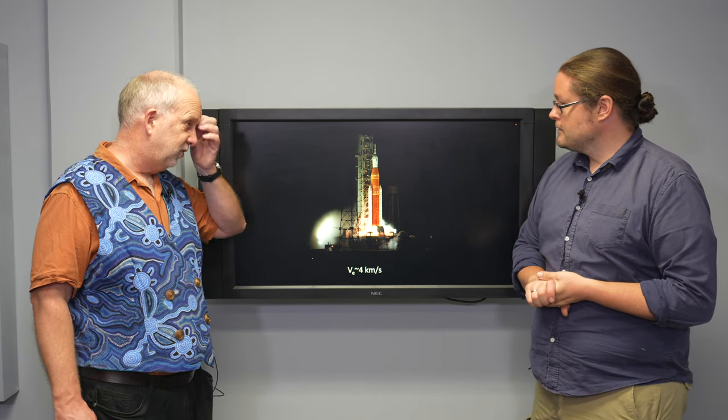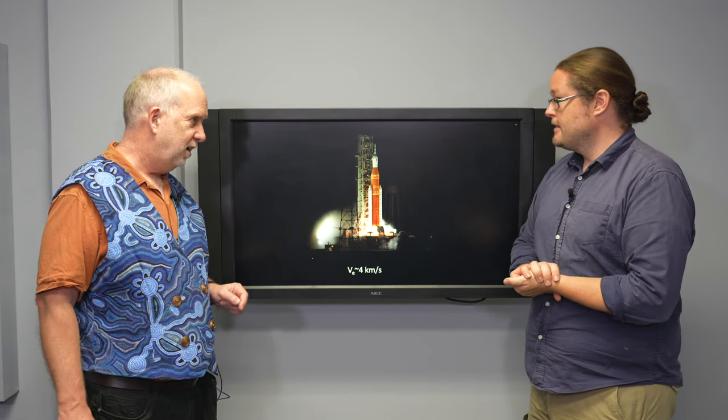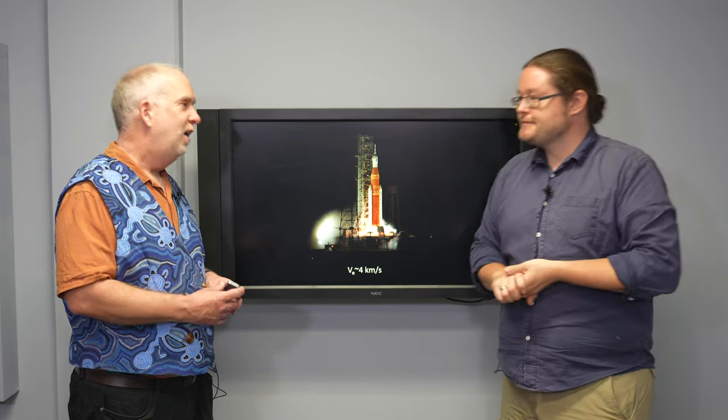Let's actually put some numbers in this. So the SLS that's going to launch the Artemis rocket going to the Moon. It's got VE, that's the exhaust velocity. And that's what fits into the rocket equations. It's about four kilometers a second.